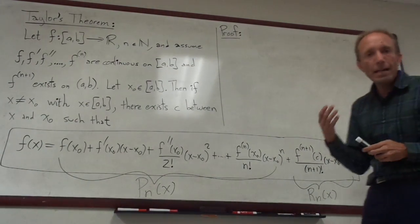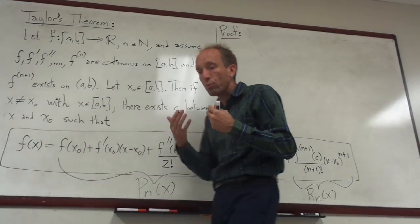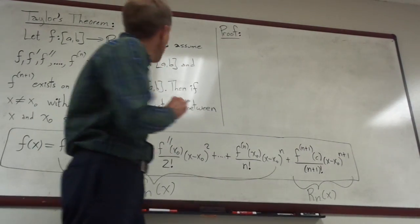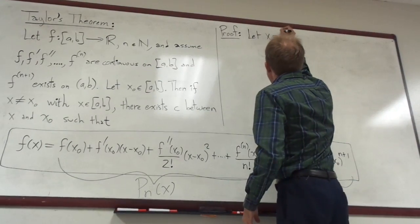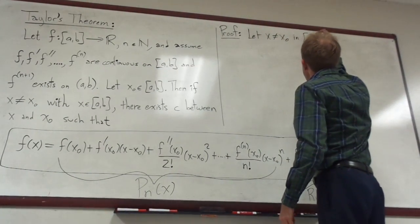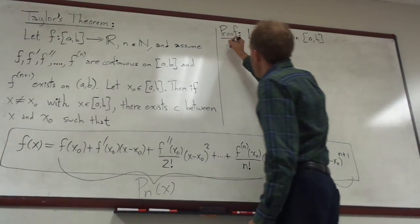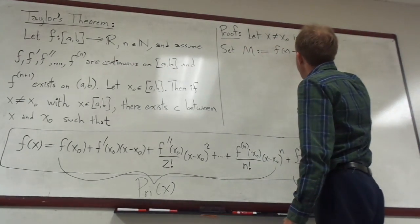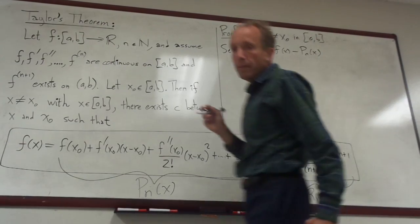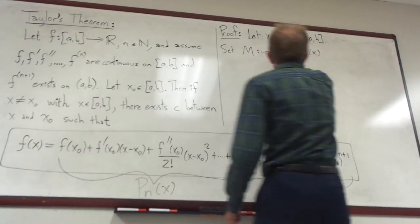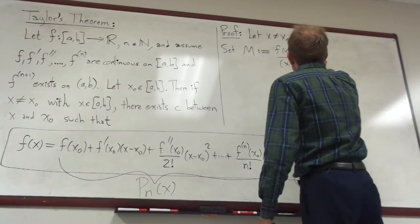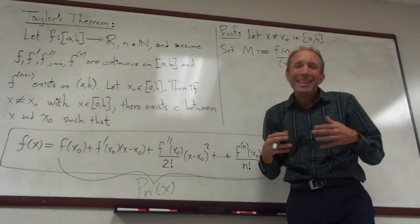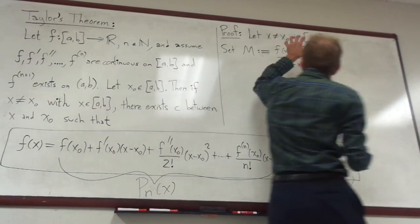That's some intuition behind the equation. Now I want to write down the proof — it's a very nice proof. We're going to use Rolle's Theorem, which is sort of a precursor to Taylor's Theorem. So I'm going to let x not equal x naught in the closed interval [a, b]. I'm going to set a new parameter m, defined as follows: we take f(x) minus p_n(x), and divide that by (x minus x naught) to the (n+1) power. For the time being, x and x naught are both assumed to be fixed, so this is a fixed value.